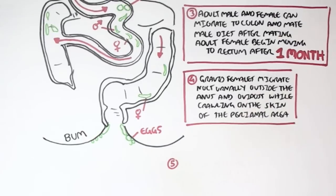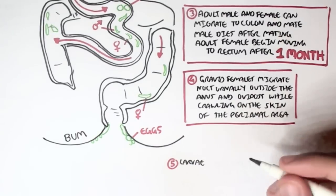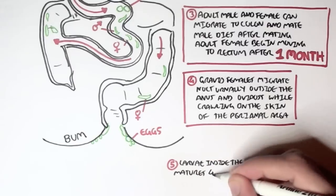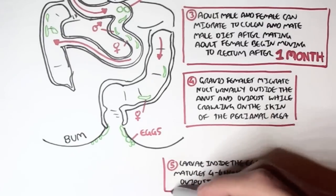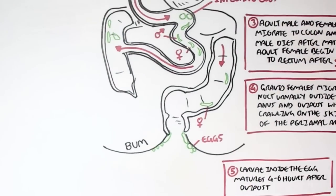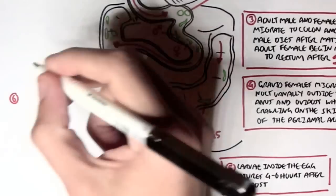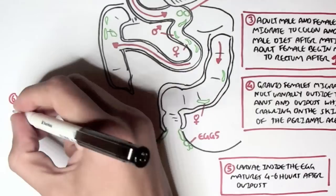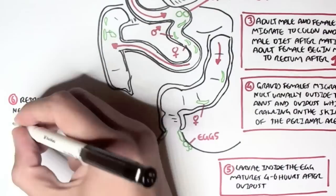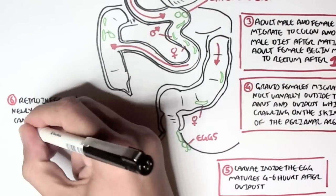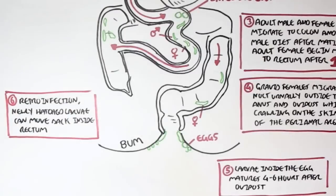The larva inside the eggs can mature 4 to 6 hours after the ovipost. So the eggs, the larva within the eggs can actually mature 4 to 6 hours after the female implanted those eggs there. And so retro-infection can occur where newly hatched larva can actually move back inside the rectum and cause the infection again, making the bum still itchy.